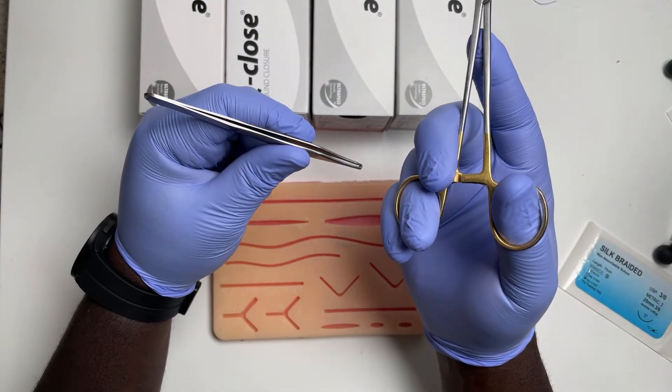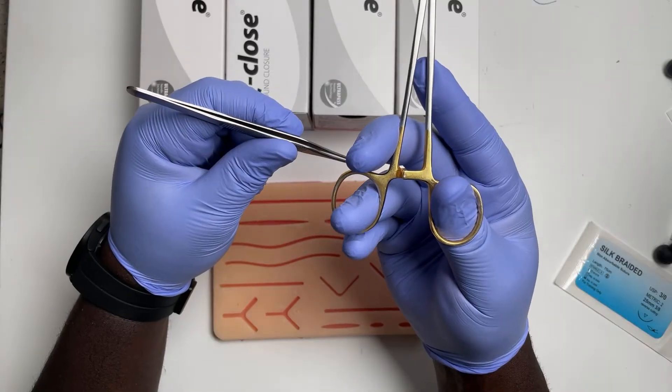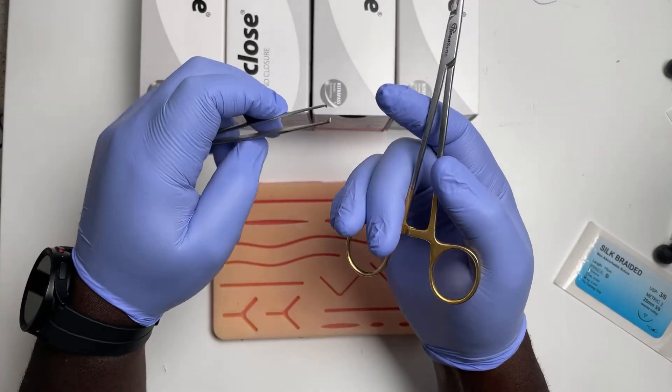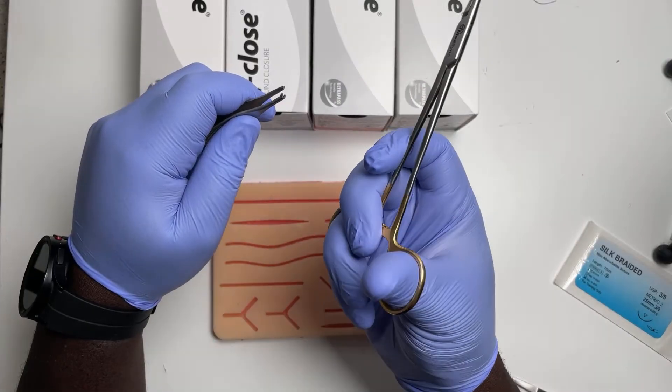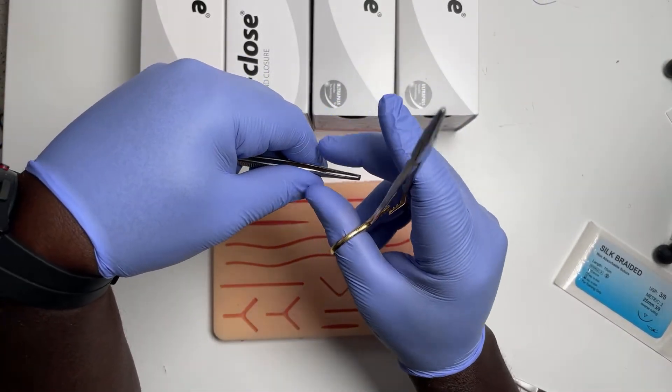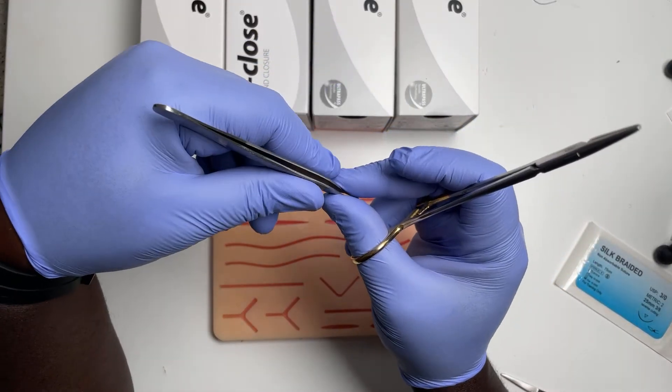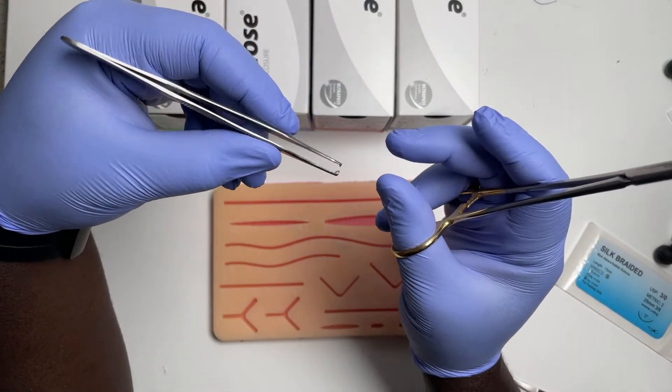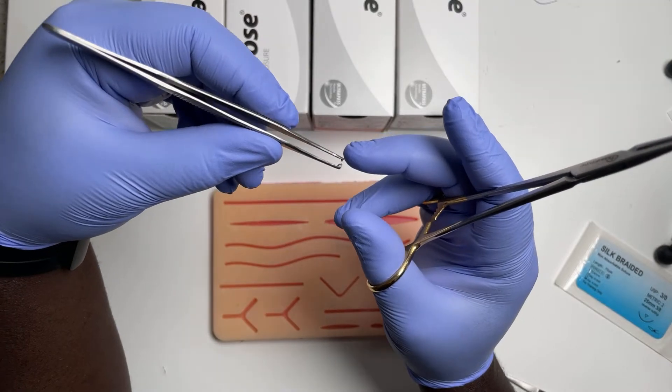Forceps are like this. One of the key things people do wrong when they're starting, when they're stressed, is they go into this position. So two things that are wrong here. The forceps should be on top of the finger. Your finger should be further down so you can apply gentle pressure between the teeth.